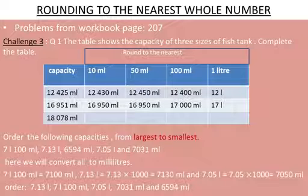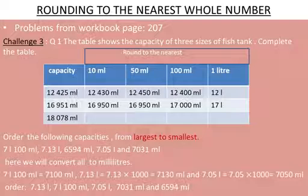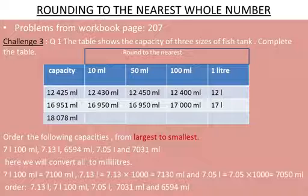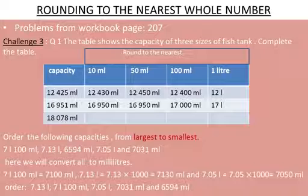Rounding 12,425 to the nearest 100 ml: look at the tens place, which is 2 — less than 5 — so round down. 425 rounds to 400, giving 12,400 ml. Rounding to the nearest 1 liter means rounding to 1000, so look at the hundreds place.